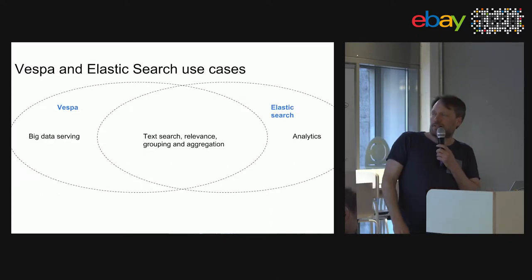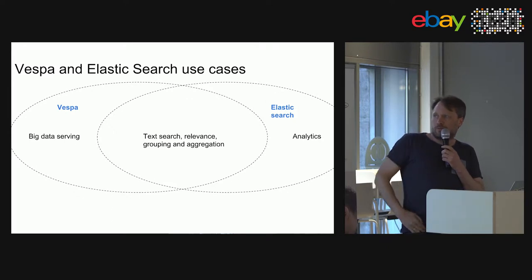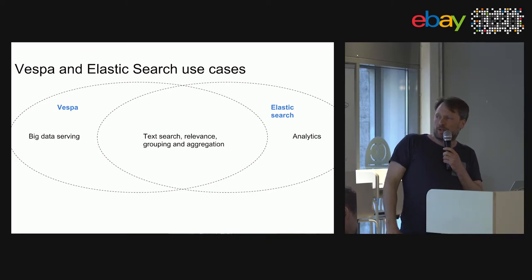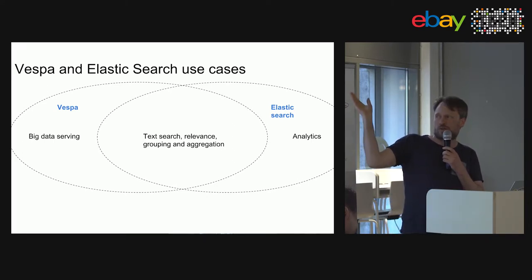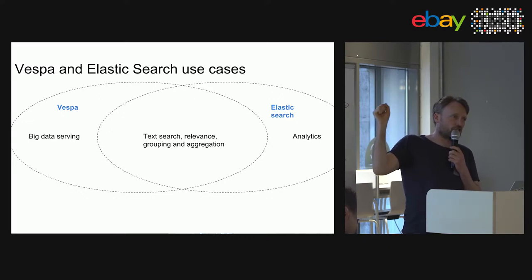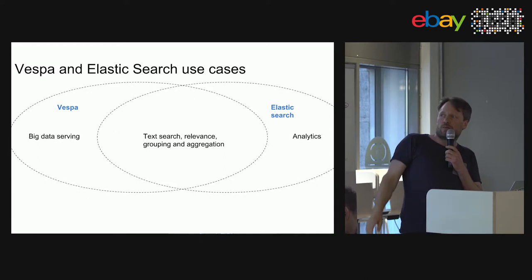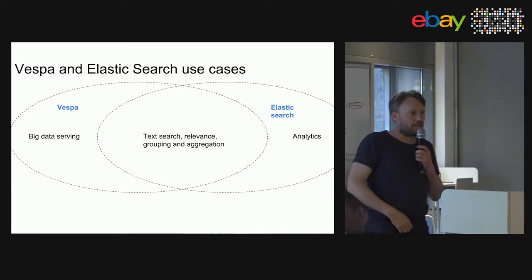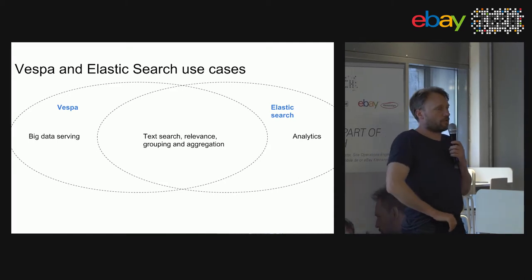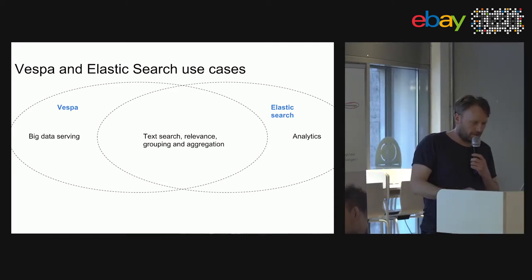Both Vespa and ElasticSearch have text search, relevance, grouping, and aggregation. ElasticSearch has features more geared toward analytics, which influences what is easy and efficient to do with it, while Vespa has features more geared toward big data serving, making those use cases cheaper and easier.